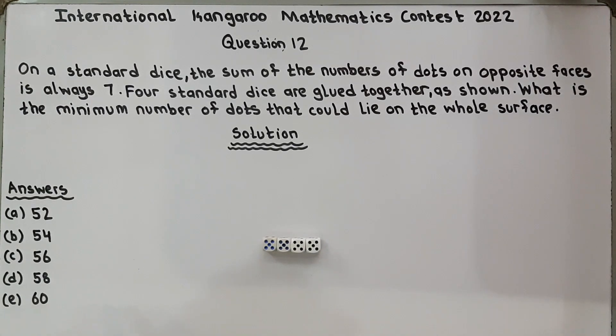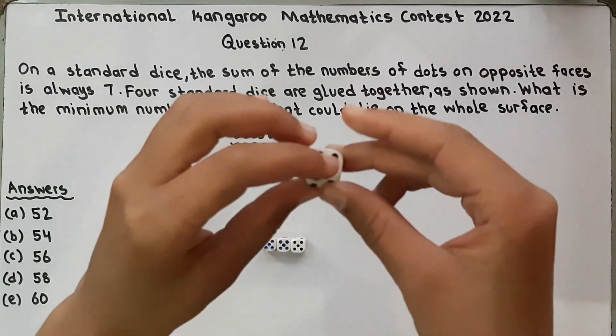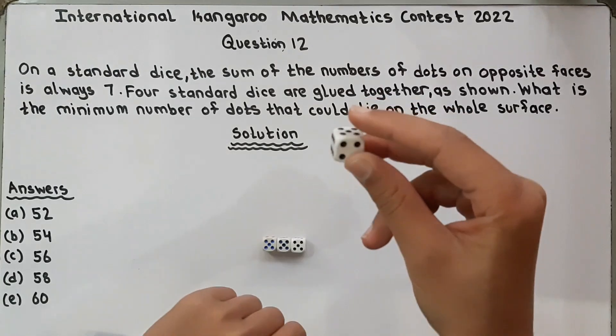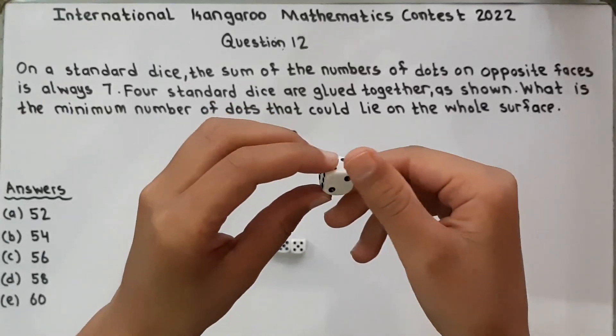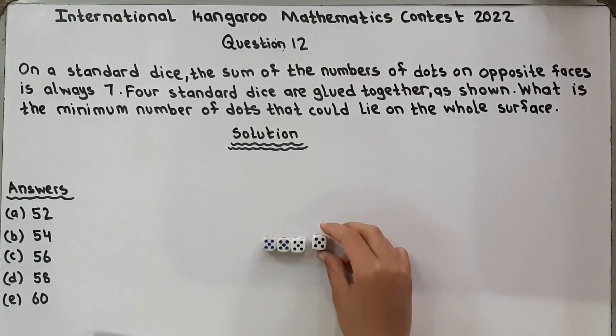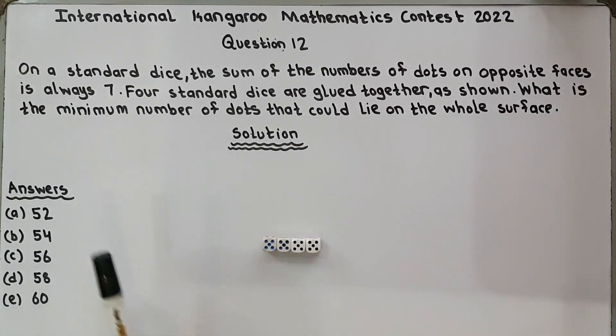Question number is 12. On the standard dice, the sum of the numbers of dots on opposite faces is always 7, like 5 and its opposite is 2, 5 plus 2 is 7. So they are saying that 4 standard dice are glued together as shown. What is the minimum number of dots that could lie on the whole surface?